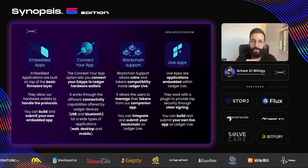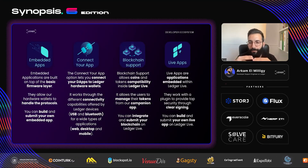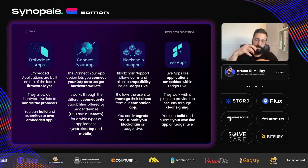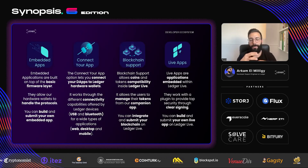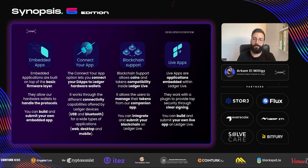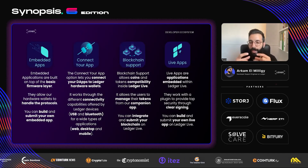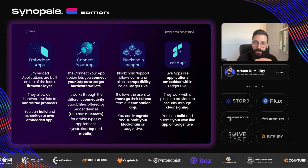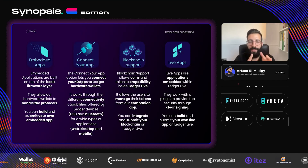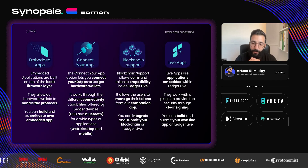The second layer of integration is blockchain support. You have the blockchain integration layer that comes directly after the embedded app layer — because to do a blockchain integration, you need the embedded app first. A blockchain integration allows Ledger hardware wallet users to manage their tokens and coins directly through the companion app, Ledger Live. You can integrate it, submit it, and if validated, it will work directly through our companion app.